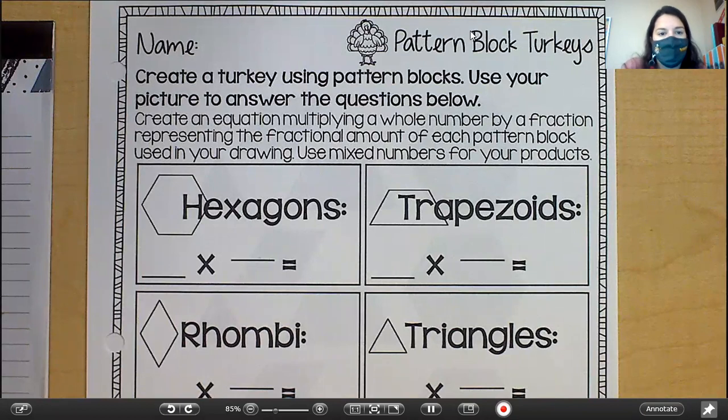To create a turkey using pattern blocks, you're going to use your picture to answer the questions below. Create an equation multiplying a whole number by a fraction representing the fractional amount of each pattern block used in your drawing. Use mixed numbers for your products.